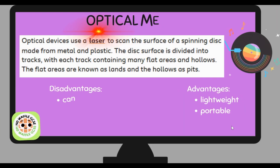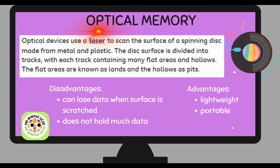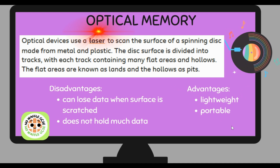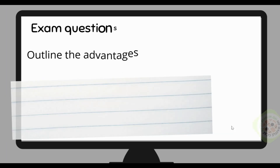Optical devices use a laser to scan the surface of a spinning disk made from metal and plastic. The disk surface is divided into tracks, and each track contains flat areas called lands and hollow areas called pits. The laser reads the depth — a hollow pit acts as a binary one and a flat land acts as a binary zero. Advantages: lightweight and portable. Disadvantages: the disk can lose its data if the surface is scratched, and it doesn't hold as much data as the other two types.